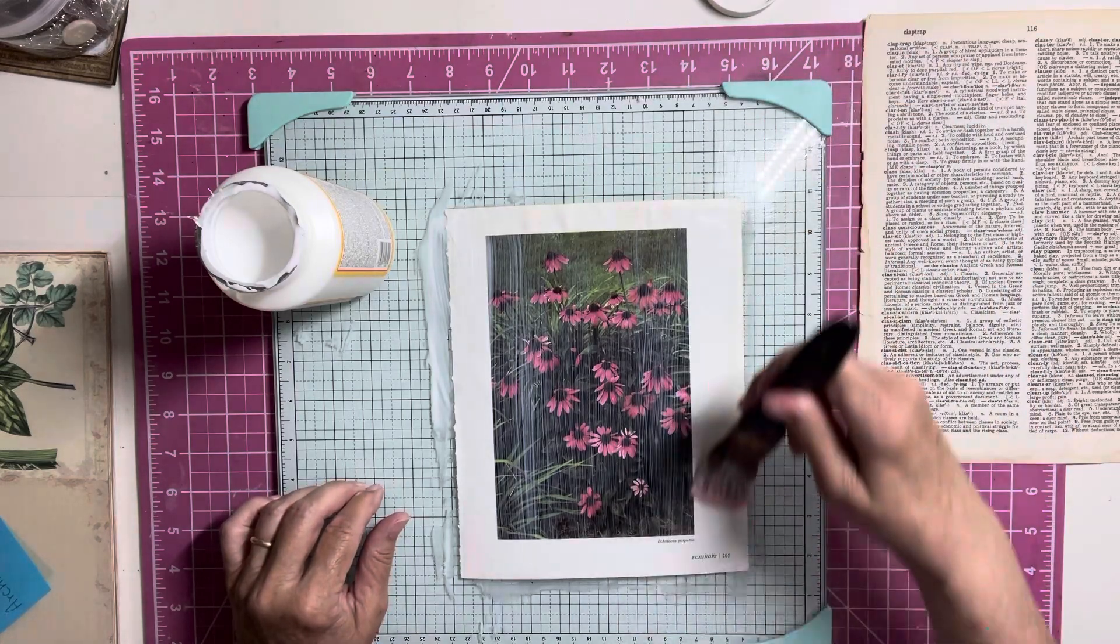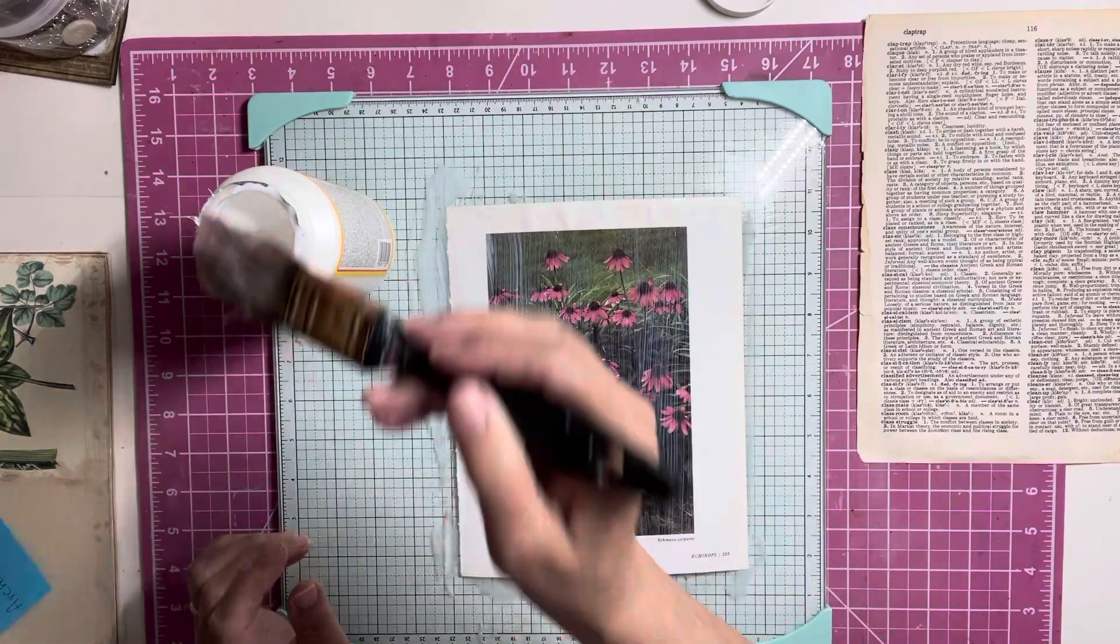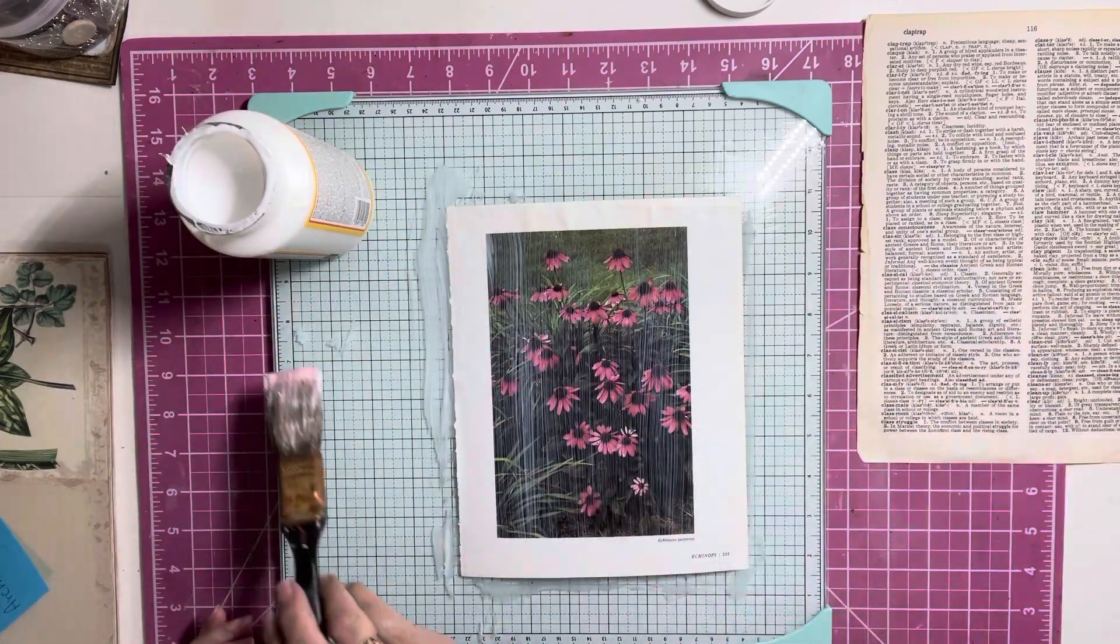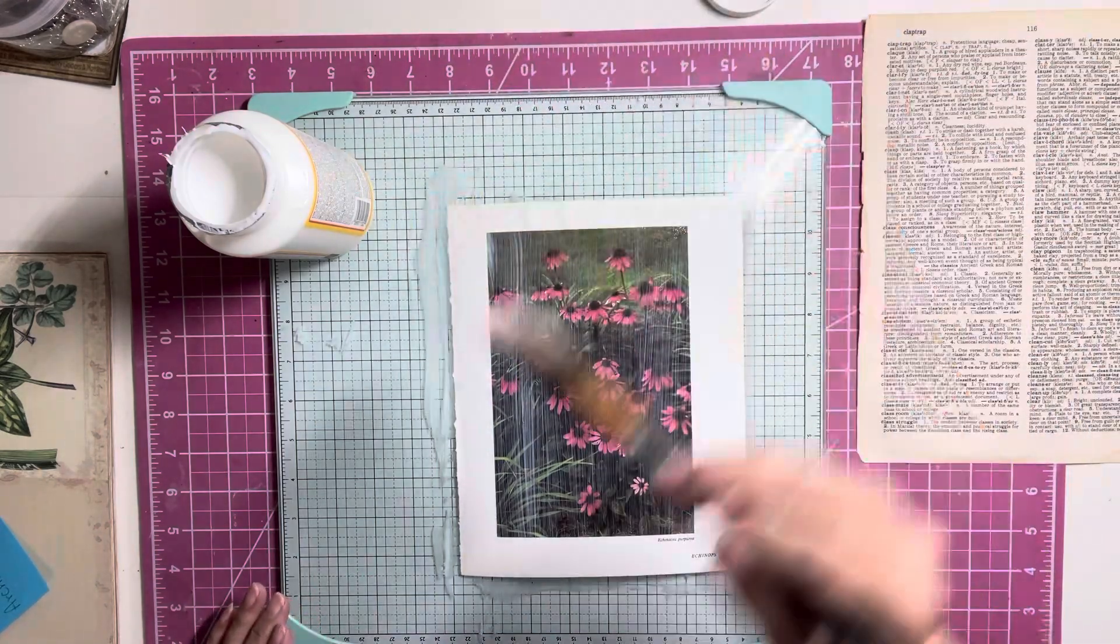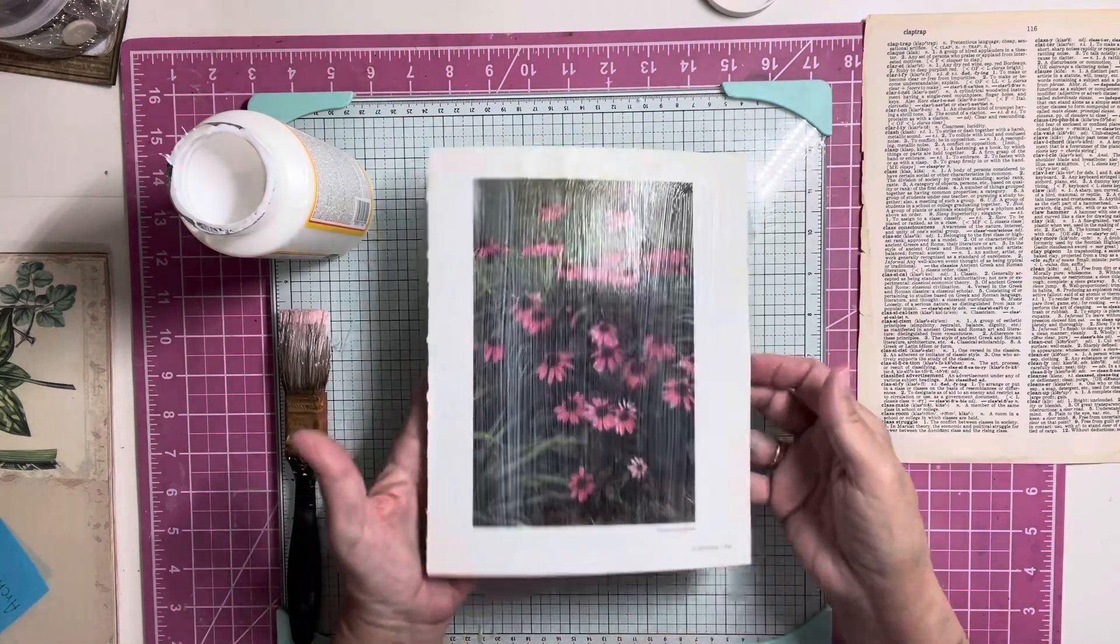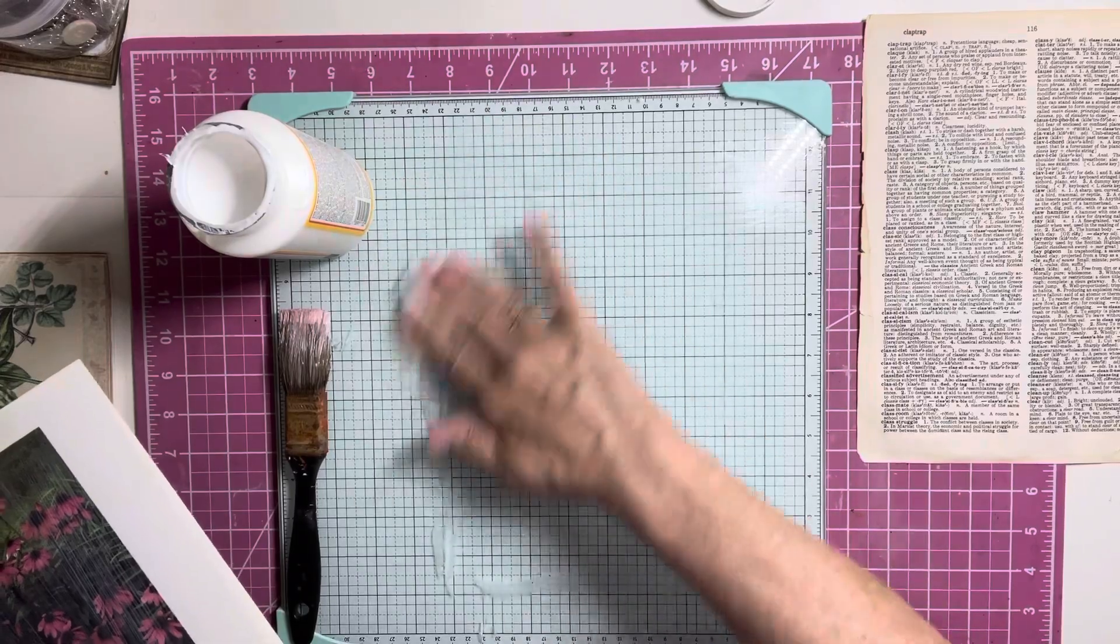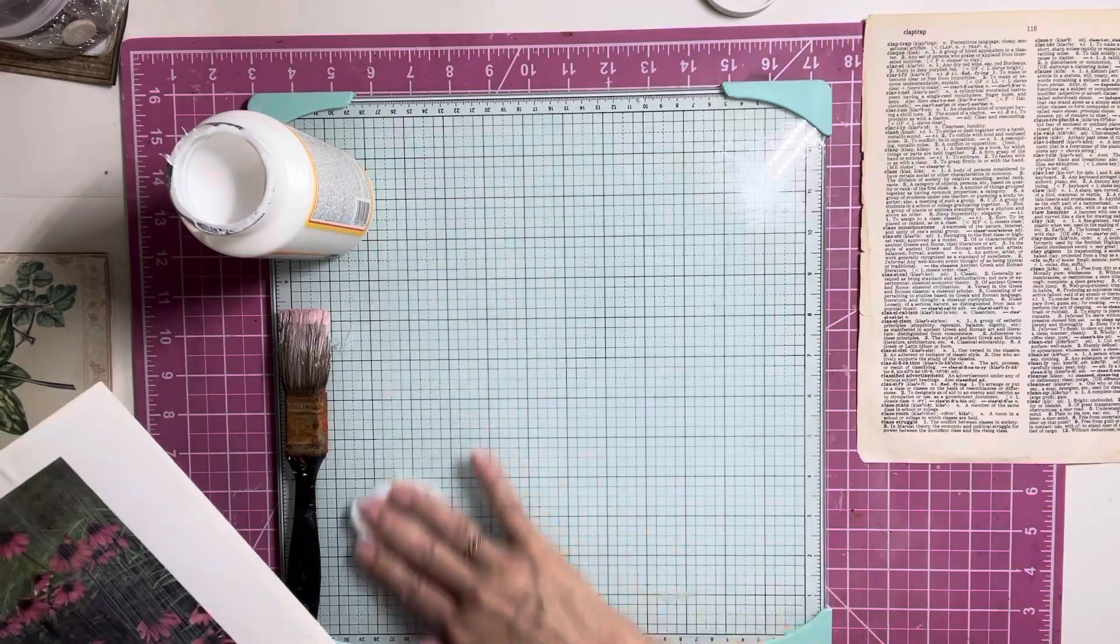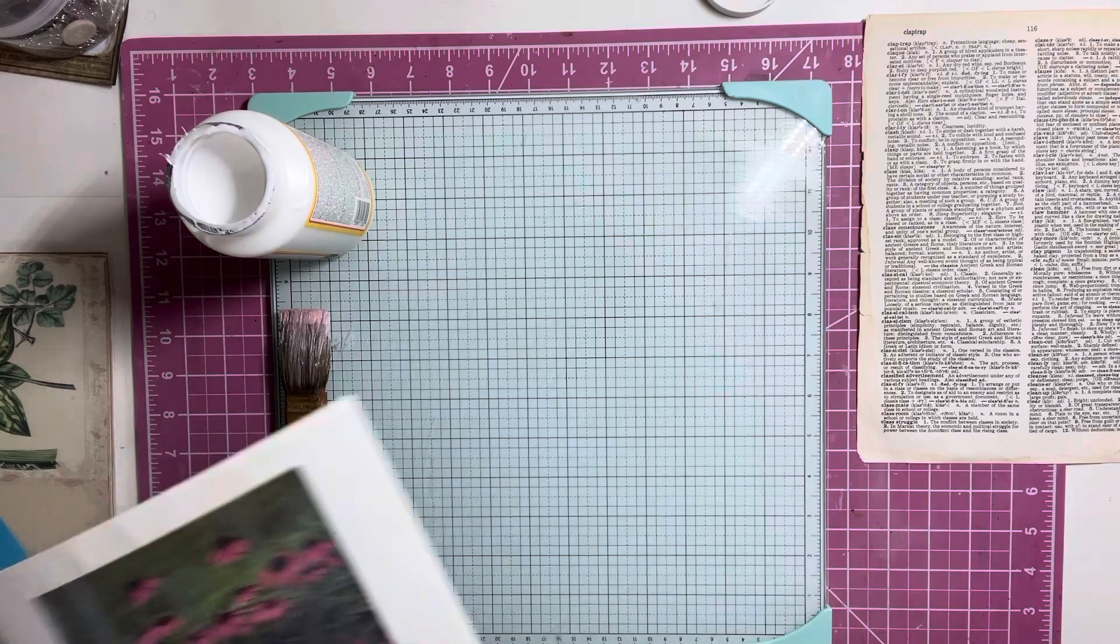And on the top, when I add the Mod Podge, I try to make the Mod Podge go in one direction. Try to smooth it out as much as possible. Now, this is going to buckle. And what I will be doing is putting my book over it or something over it to let it dry. Let me get this up and get this all wiped off.